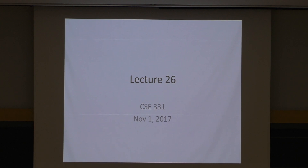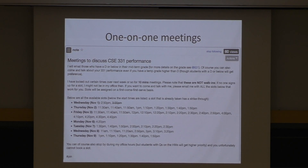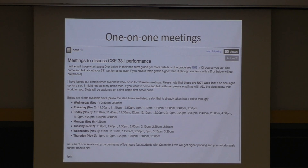All right, let's get started. Apologies for the delay, but I have assigned temporary letter grades for all of you. You can figure it out — there's an algorithm you can follow. I've also uploaded it on Hub so you can double check to make sure I didn't make any mistakes. I also have blocked out a bunch of 10-minute slots in the next week or so for one-on-one meetings. Just go through the post and whichever slot is not stricken through is free — send me an email about which slots work for you.